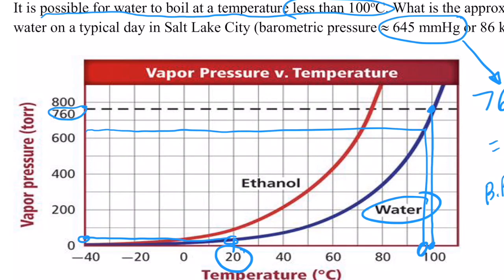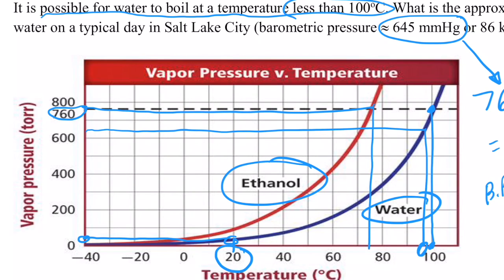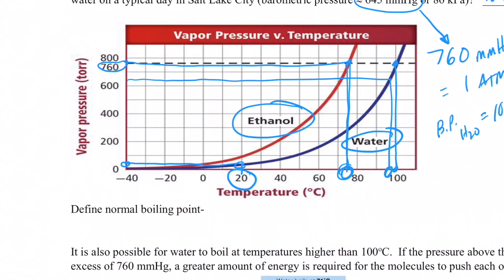Welcome back — hope you enjoyed that demonstration. Notice that ethanol must have weaker intermolecular forces than water, because ethanol reaches a vapor pressure of 760 mmHg at about 75°C. So it's easier to separate ethanol molecules from each other than water molecules, because ethanol achieves a vapor pressure of 760 mmHg at a much lower temperature.